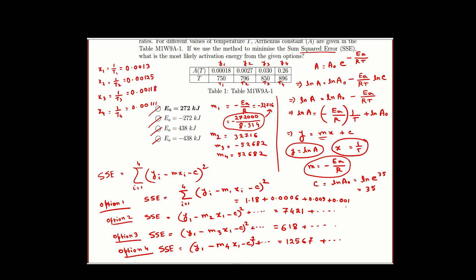If we calculate option 4 and observe only the first term you will get 12,567 and some 3 more terms. Observe that all these terms are much greater than option 1. So option 1 will give you the least SSE. So option 1 is the correct option.